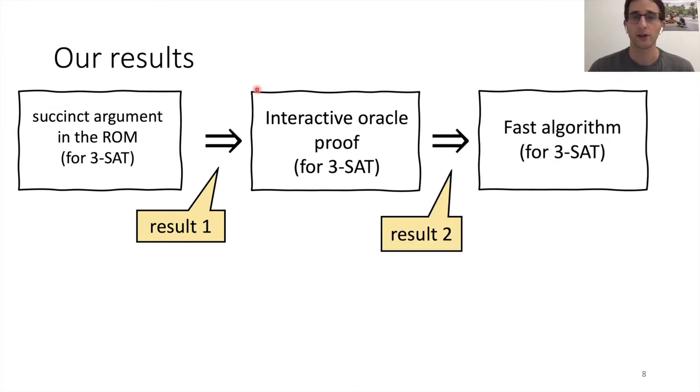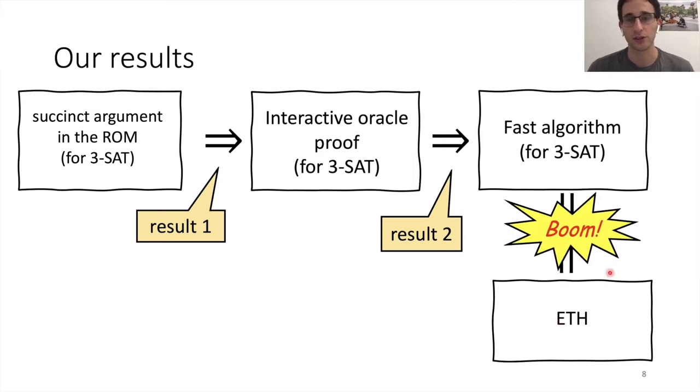Then our second result shows that it gives limits on the soundness of interactive oracle proofs. In particular, if you have a very good IOP, you get a very fast algorithm for 3-SAT. Combining these, we're able to show that if you start with some too good to be true SNARG, you get a too good to be true IOP, which is a very fast algorithm for SAT. And if you assume ETH, the exponential time hypothesis, which is a standard complexity assumption, then you get a contradiction, ruling out the existence of this SNARG to begin with.